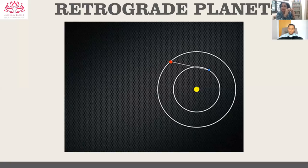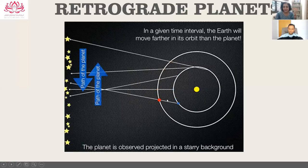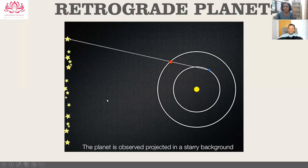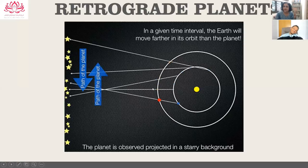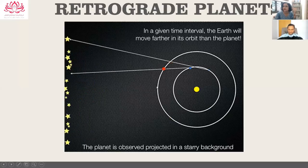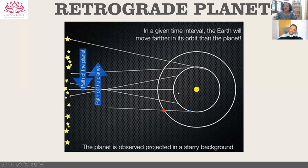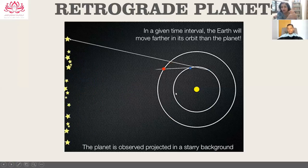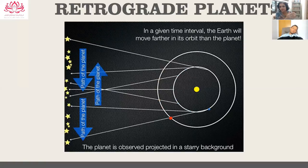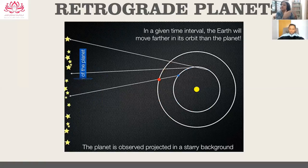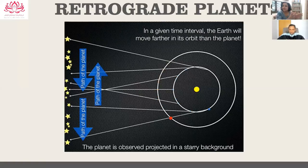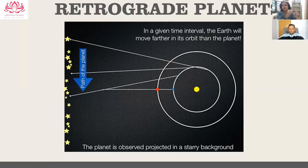At the points when the outer planets are retrograding, they are closest to the Earth. Any vibration or light which is very close to you will affect you the strongest. That is why the retrograde planet affects you very much — it is a concentrated effect.